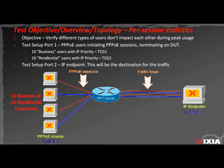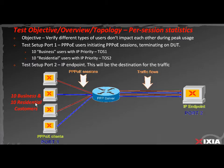The business customers will have a higher priority than the residential customers. After they set up their PPPoE sessions, they will send traffic destined towards the Ixia port 2, which has one IP endpoint. Once that is done and traffic is verified, we will increase the rate of the business users with higher priority.